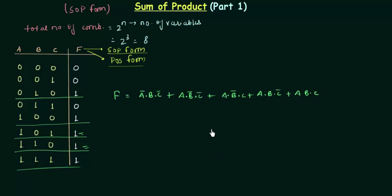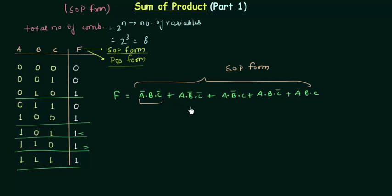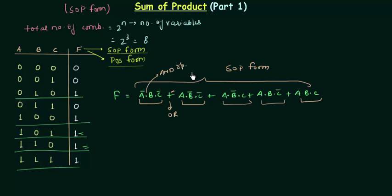This I call as the Sum of Product form, the SOP form. I am calling it sum of product because I have products — this dot is the AND operator, but it looks like product. So I have the products and then I am taking the sum of these products using the OR operator, which looks like sum. That's why I call it Sum of Product.